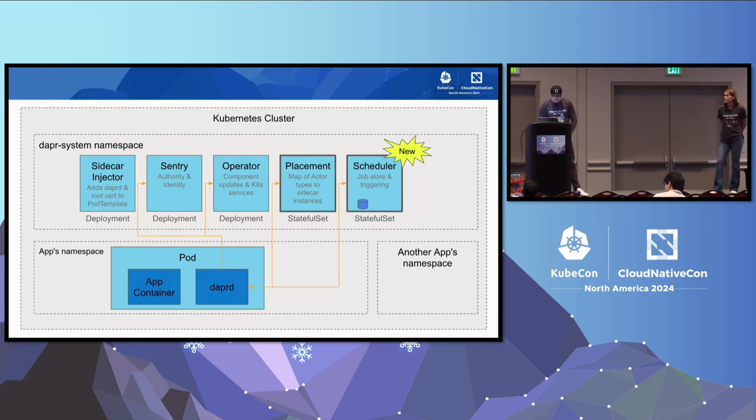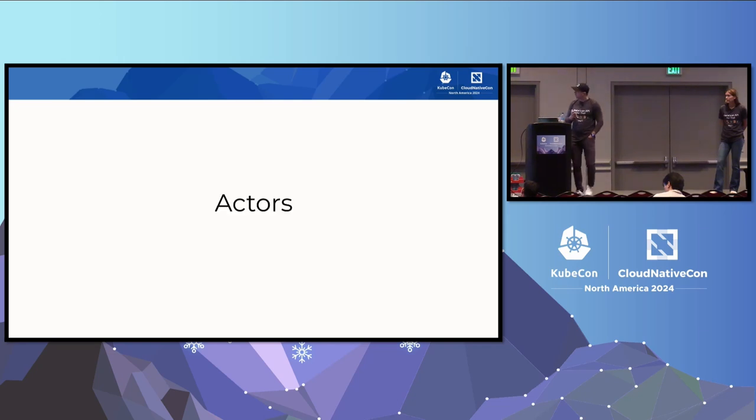In the pod of your application you're going to have the sidecar, and we call it DAPRD. Let's go to the next step: actors.